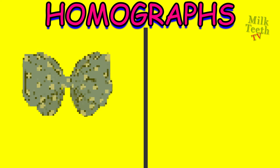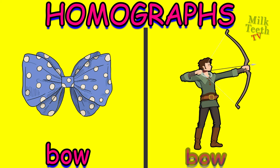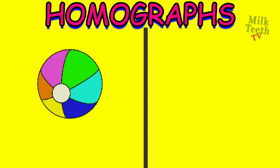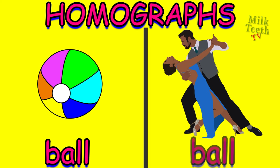Bow. And this is bow and arrow. Ball — this is a ball used to play. And this is a ball dance, a type of dance.